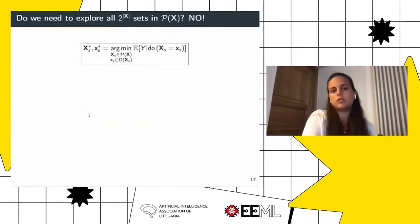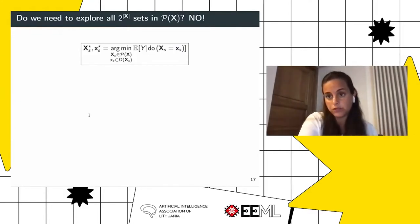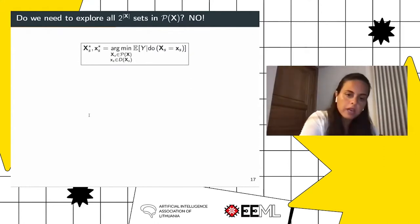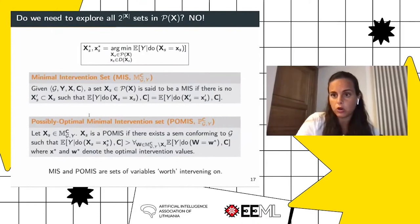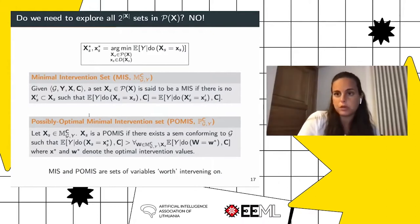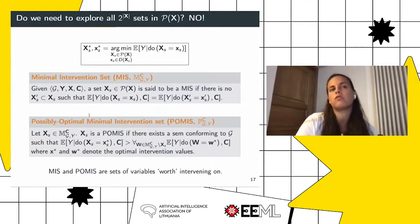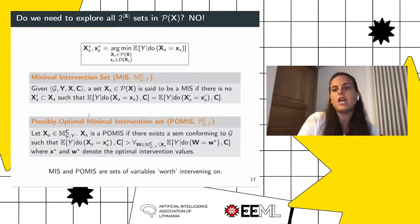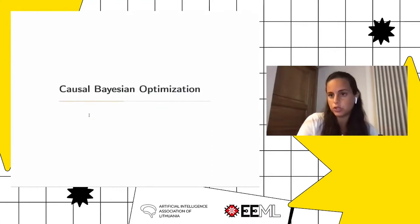The first thing to notice is that exploring a power set of all possible interventions in a graph is very expensive. However, we can exploit properties of the causal graph to identify invariances in the interventional space that allow us to reduce the search space. Instead of searching the full power set, we consider only intervention sets worth intervening on. The intuition is: if I can reach the same function value by intervening on two variables instead of three, I should intervene on two because I pay a lower cost. Exploiting these properties reduces the computational cost of this optimization.